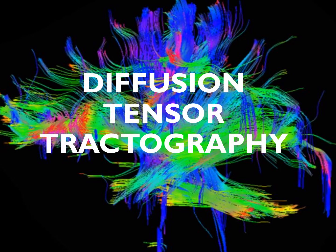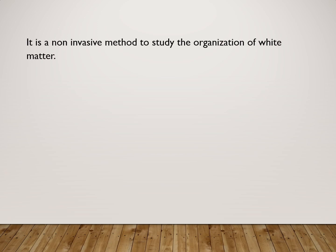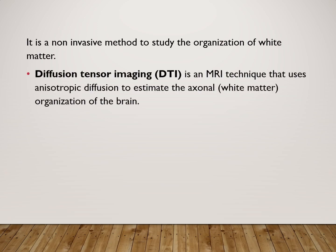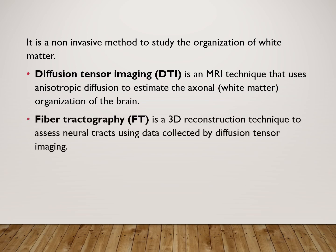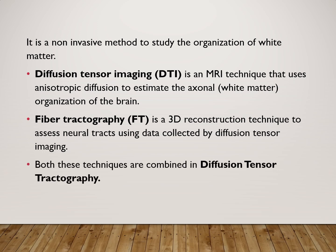Diffusion tensor tractography is a non-invasive method to study the organization of white matter. Diffusion tensor imaging is an MRI technique that uses anisotropic diffusion to estimate the axonal or white matter organization of the brain. Fibre tractography is a 3D reconstruction technique to assess neural tracts using data collected by diffusion tensor imaging. Both of these techniques are combined in diffusion tensor tractography.